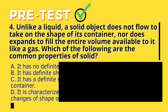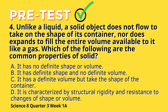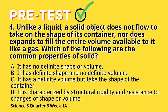Question 4: Unlike a liquid, a solid object does not flow to take on the shape of its container, nor does it expand to fill the entire volume available to it like a gas. Which of the following are the common properties of solid? A. It has no definite shape or volume. B. It has definite shape and no definite volume. C. It has definite volume but takes the shape of the container. D. It is characterized by structural rigidity and resistance to changes of shape or volume.